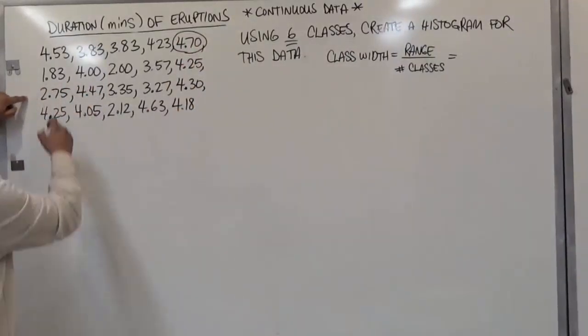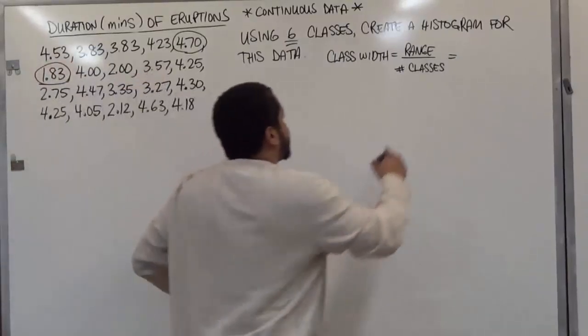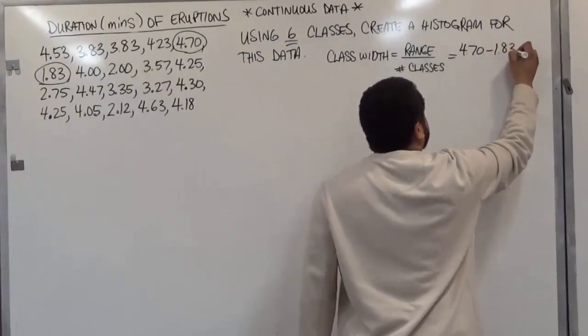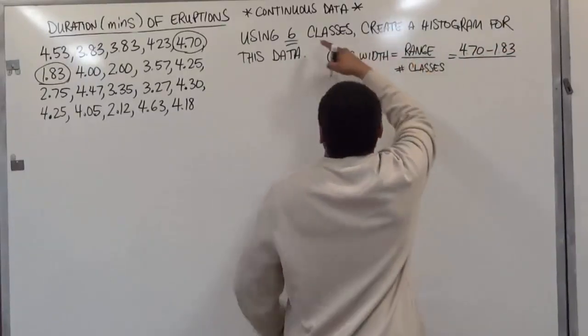So we're going to subtract these two for our range. We have 4.70 minus 1.83. We're going to divide this by the number of classes which are 6.